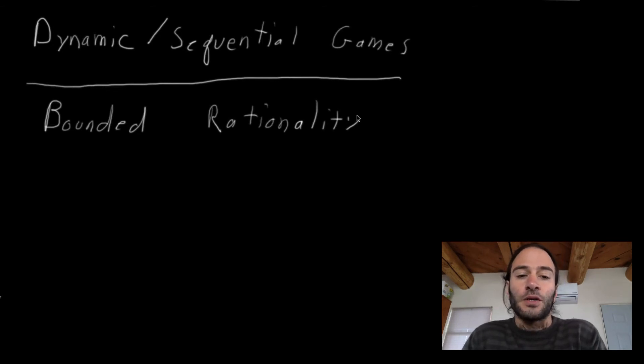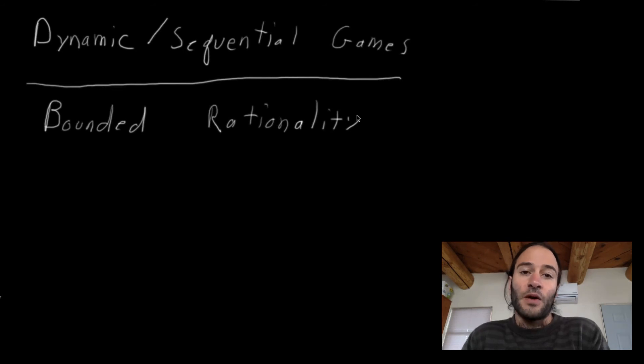Then we're going to talk about what is known as the level K model of games, and this is just one way game theorists have started to think about bounded rationality. I want to emphasize there are many other ways, namely prospect theory and something known as quantal response equilibrium. There are many ways that game theorists deal with bounded rationality. I'm just going to introduce one, and references to the others can be found in the bibliography section.